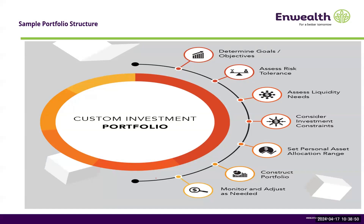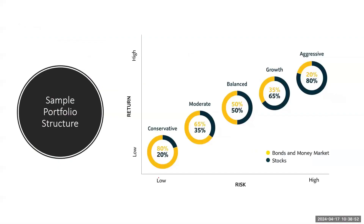You construct your portfolio and have monitoring in place. This is just a sample — you may consider risk-return profiles: conservatives may have 20% shares and 80% fixed income securities; moderate, 35% shares and 65% fixed income; balanced will be 50-50; growth may be 65% stocks; and aggressive, 80% stocks.